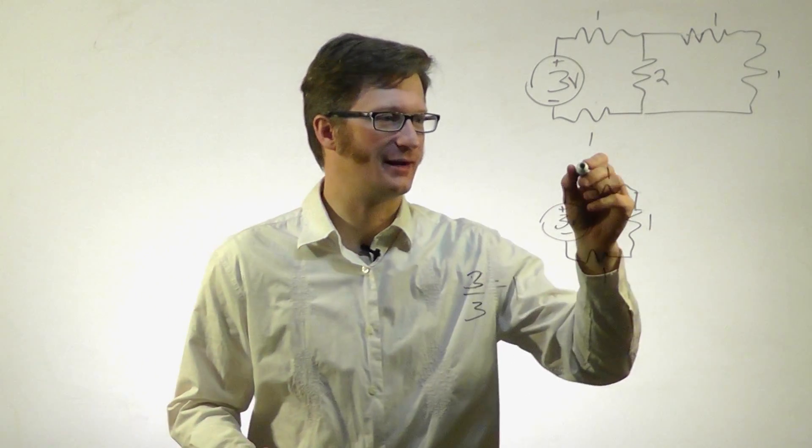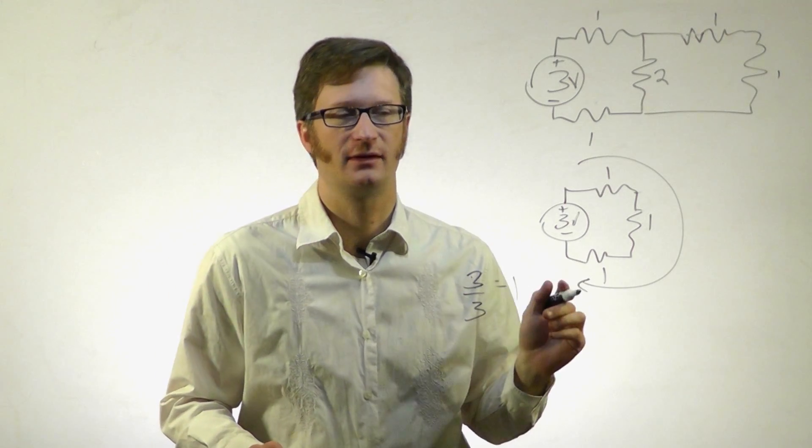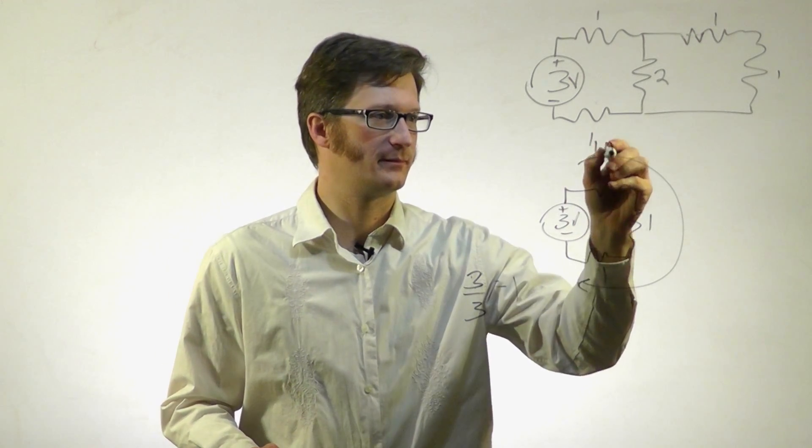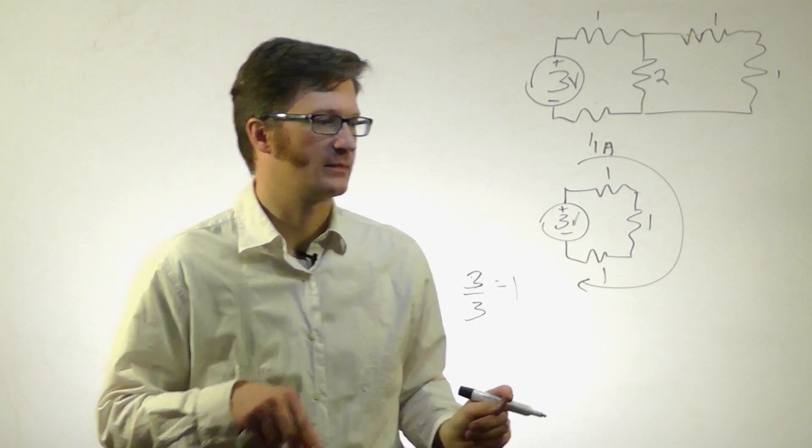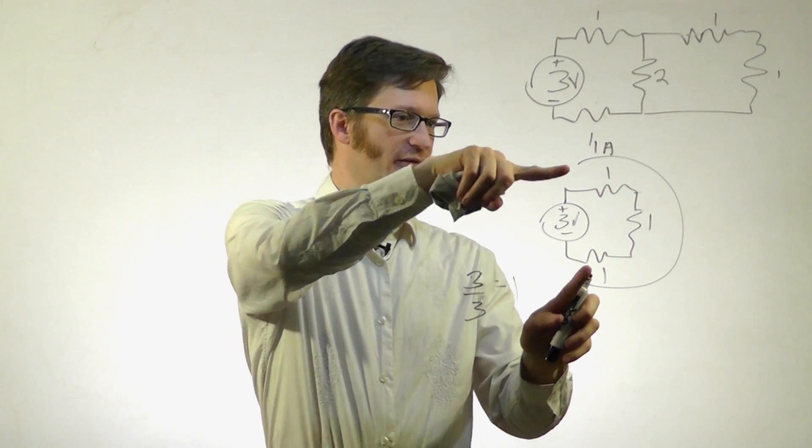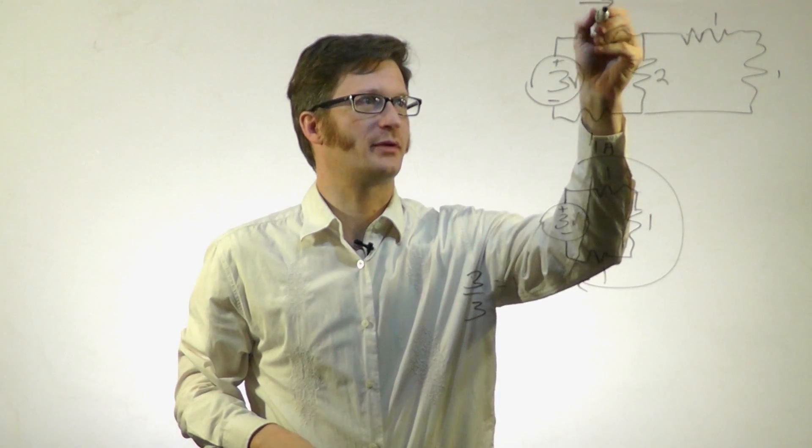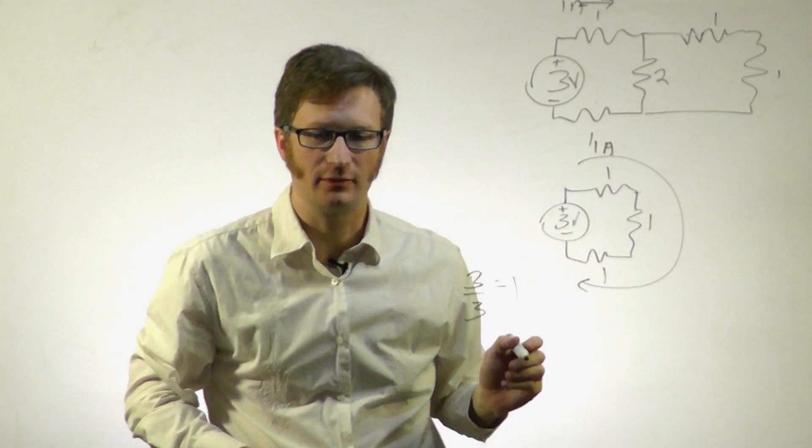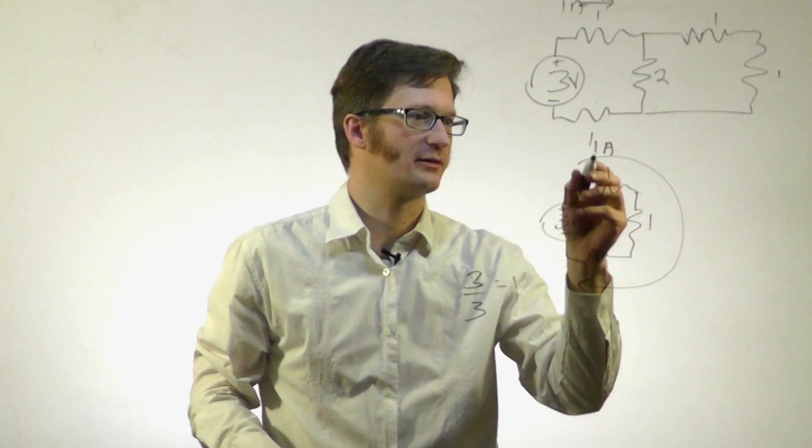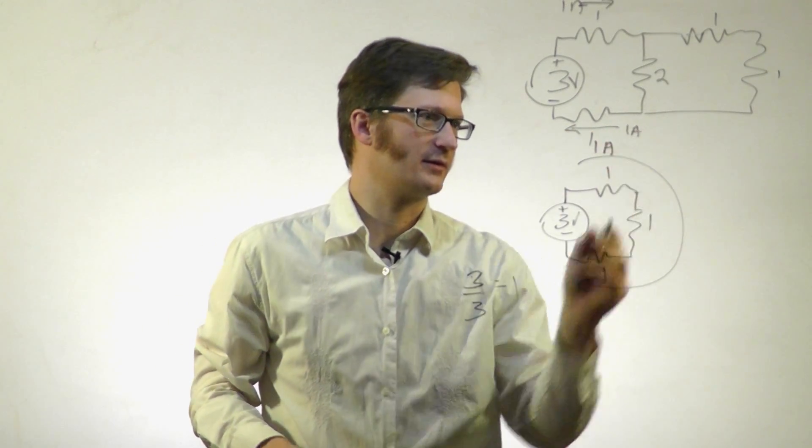That means going around this simplified circuit, I have 1 amp flowing through it. From the original circuit, the two resistors that are unchanged are these two. So I know I have 1 amp.